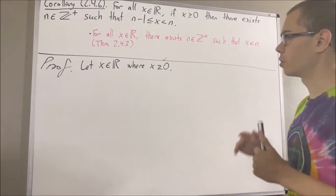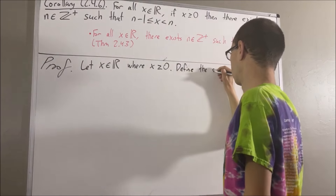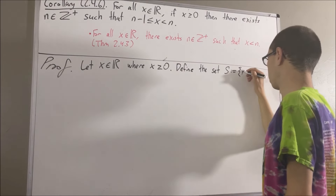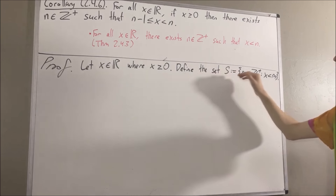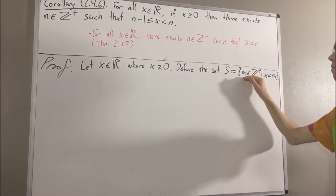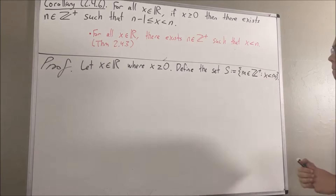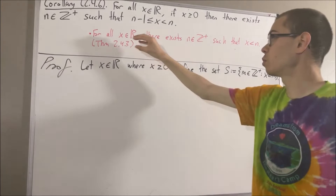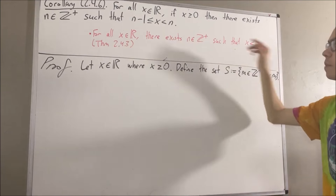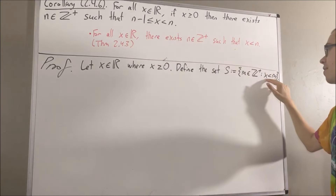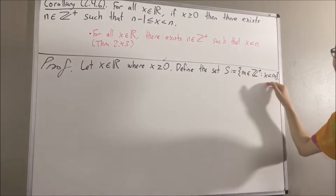To do that, let's consider the following set. We define the set S to be the set of all positive integers n such that x is less than n. By Theorem 2.4.3, there is at least one positive integer which satisfies this inequality, so S is non-empty.